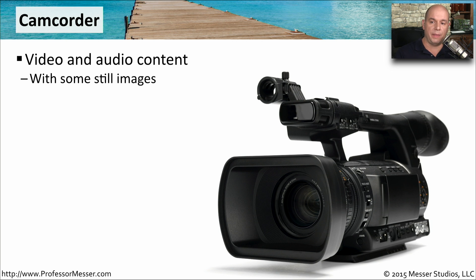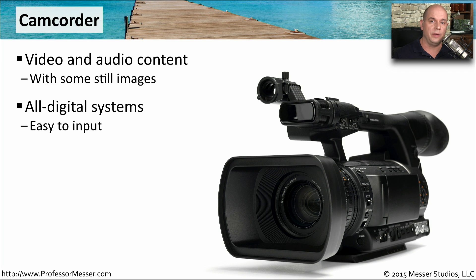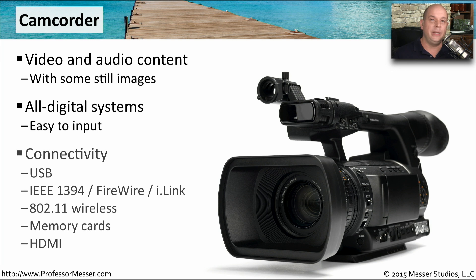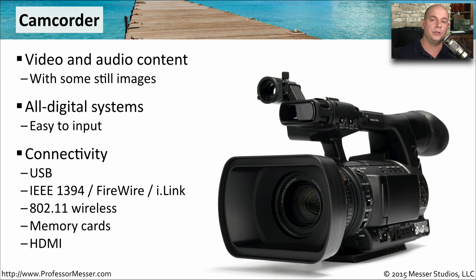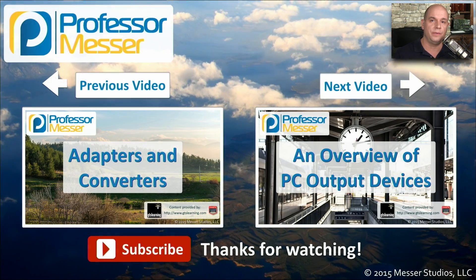For more advanced video uses, you might use a camcorder, which is able to capture both audio and video, and occasionally has a still picture capability as well. These days, these cameras are completely digital — they capture image and audio and store it onto a hard drive, SSD, or some other type of flash memory. There are many ways to get these videos into your computer: through USB, higher-speed connectivity through FireWire (also listed as IEEE 1394 or iLink), or 802.11 wireless. You could also pull the memory card out and put it right into your computer, or if your computer supports HDMI input, you can output from the camera directly into your computer and use that signal as your video source for video conferencing.